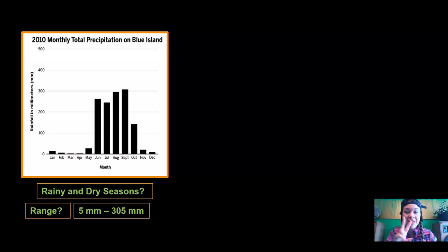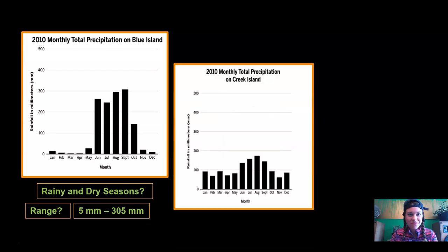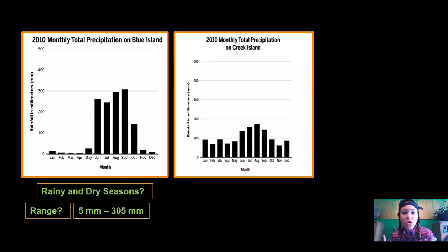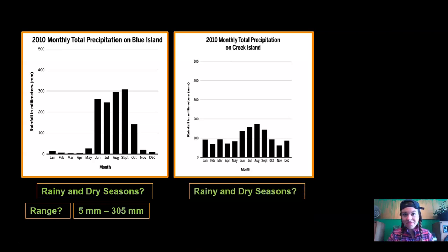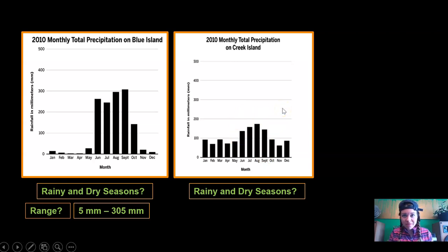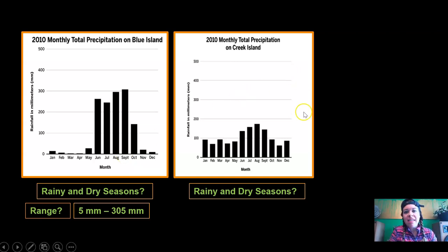Now let's look at the second piece of data — the monthly total precipitation for Creek Island. Take a look and decide: are there rainy and dry seasons? It looks like there are. In June, July, August, and September there's more rain than other months. But it's definitely not as big a difference as Blue Island, where some months are really rainy and some are really dry. Still, there are rainy and dry seasons in both places.